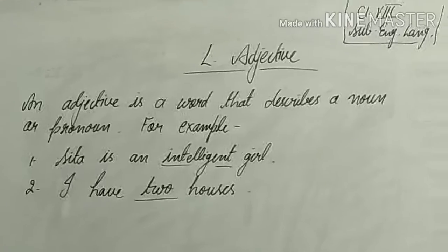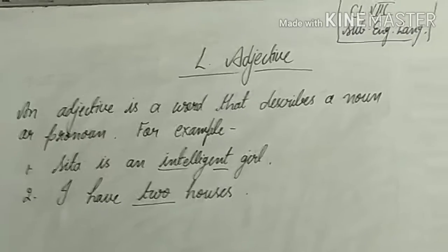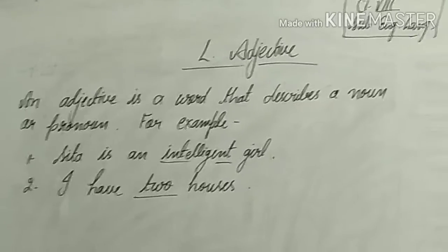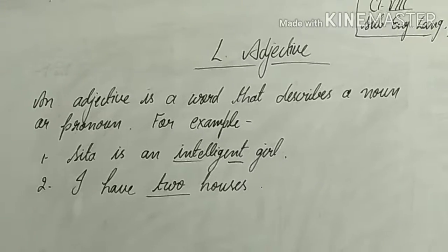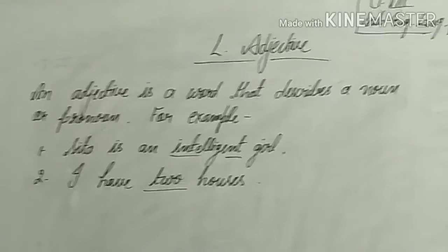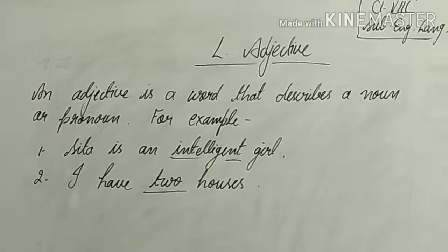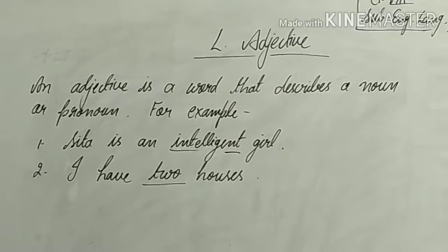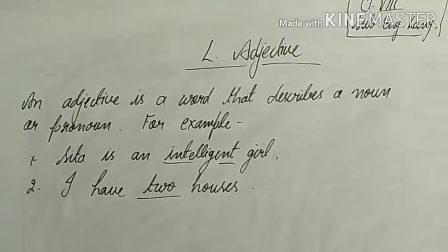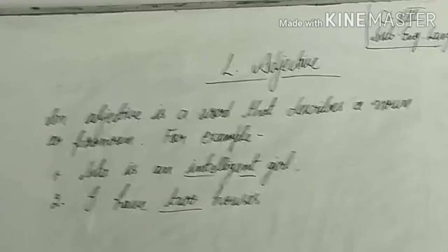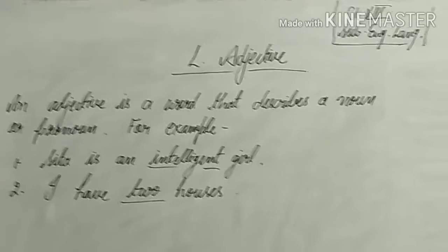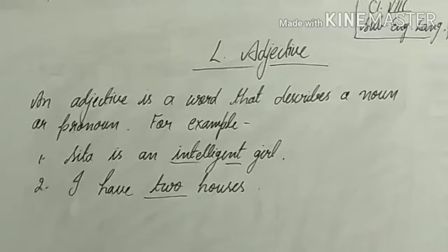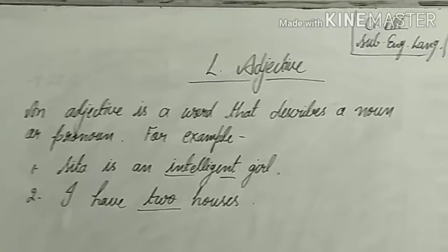What is an adjective? Firstly we will learn the definition of adjective. In one line we can say adjectives are describing words. An adjective is a word that describes a noun or pronoun. It says something more about noun and pronoun — it gives some additional information about noun and pronoun.